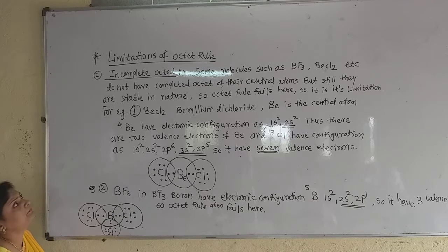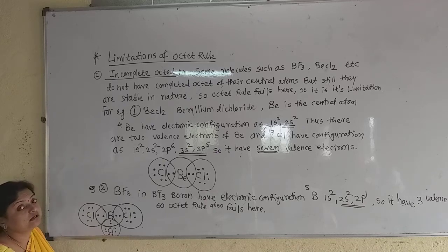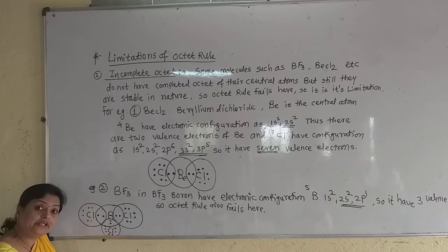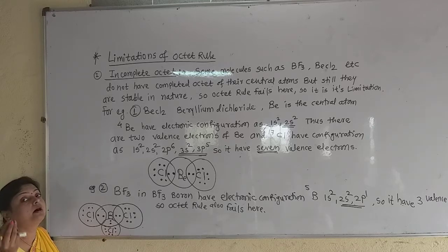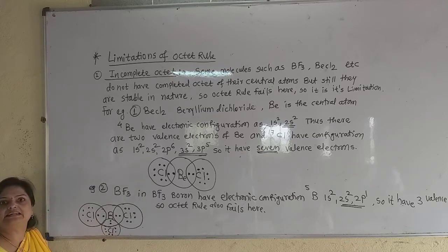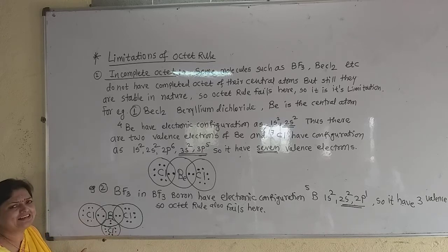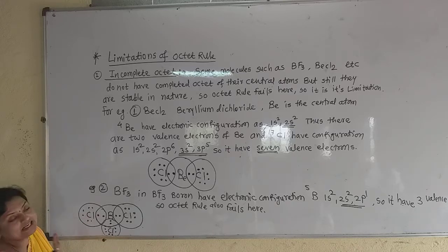In these molecules, the central atoms such as boron in BF3 and beryllium in BeCl2 do not complete their octet. Still they are very, very stable in nature. But octet rule says every atom during the formation of a covalent bond completes its octet in the outermost valence shell as that of the inert gases. But here, the central atom does not complete its octet, but they are stable. So this is the limitation — octet rule fails here. The limitation is: incomplete octet.